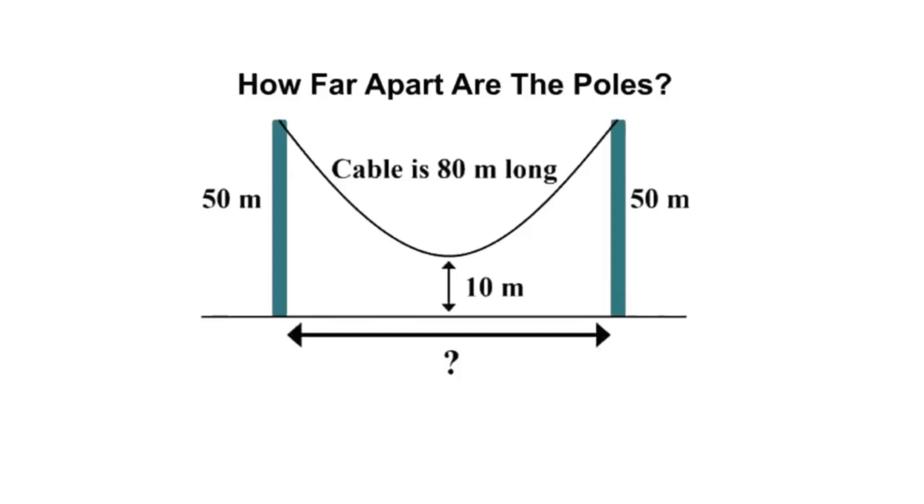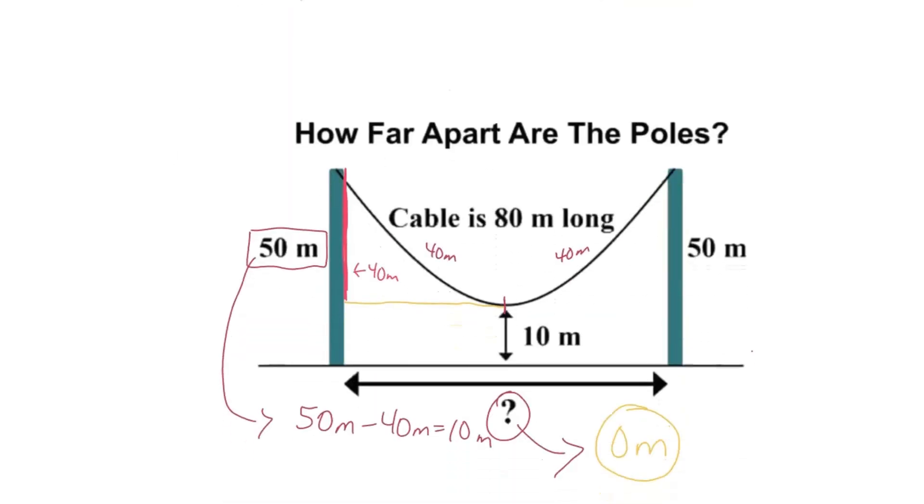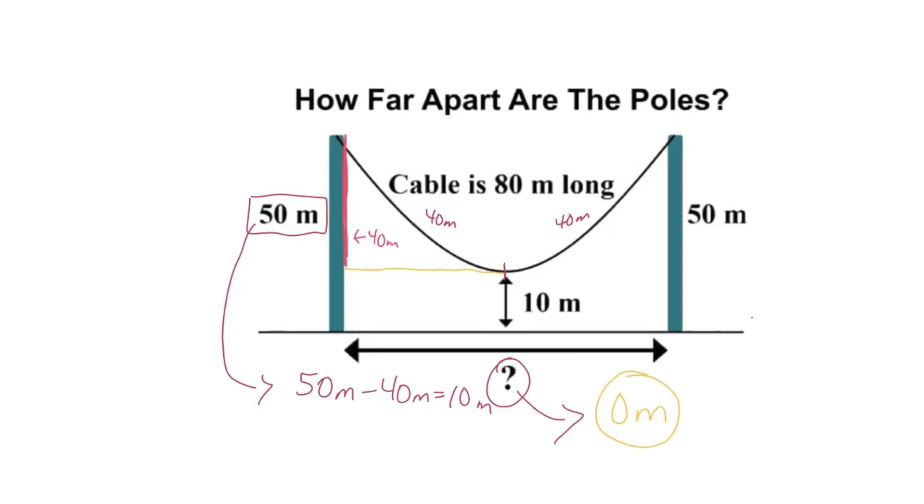Alright, so basically what you need to do is pretty much ignore the diagram because it's sort of misleading. If we split that cable in half, we're going to get 40 meters on both sides, so each side of the cable is 40 meters.